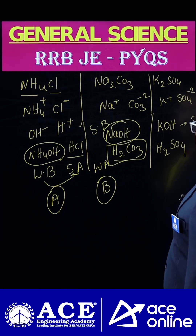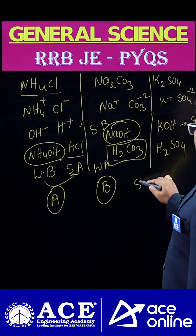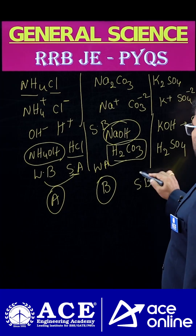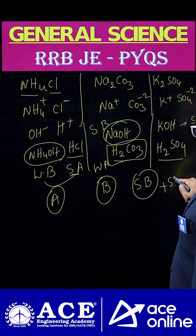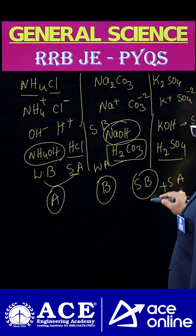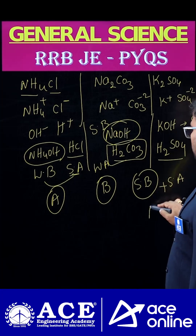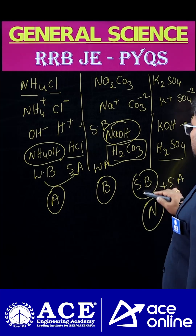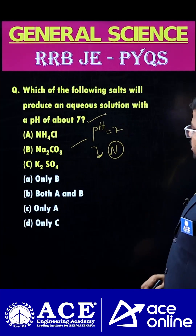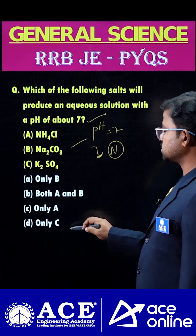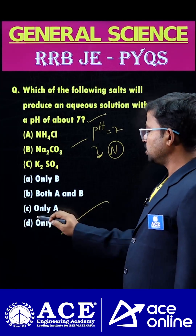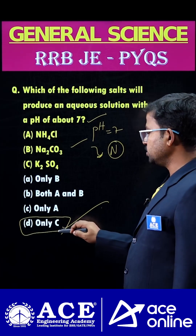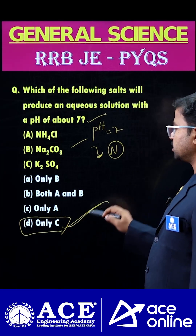For K2SO4, we have KOH, which is a strong base, and H2SO4, which is a strong acid. By the combination of a strong base and a strong acid, what we get is a neutral solution. That is why the correct option is option C — potassium sulfate — which produces a neutral aqueous solution with pH equal to 7.